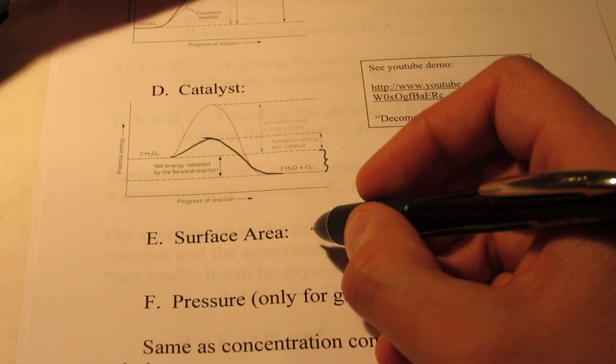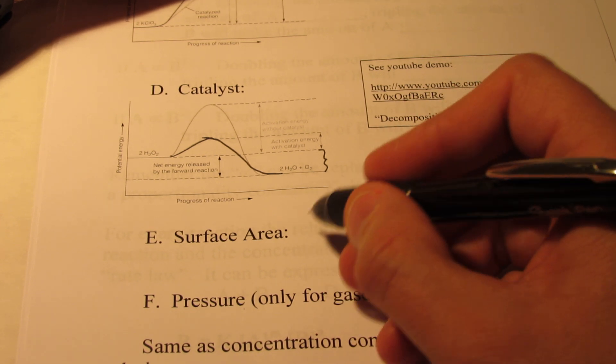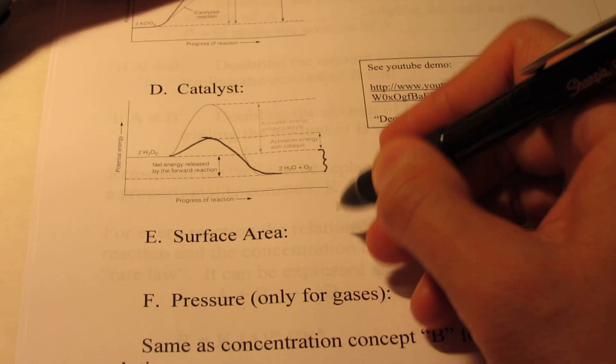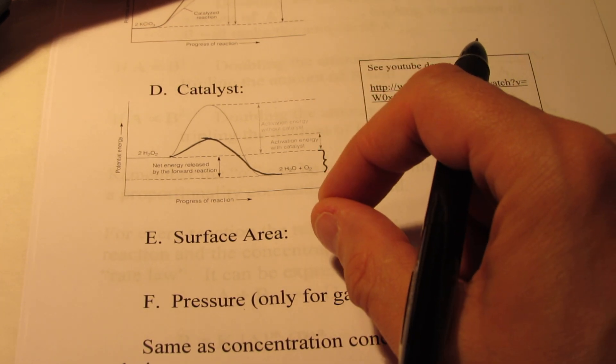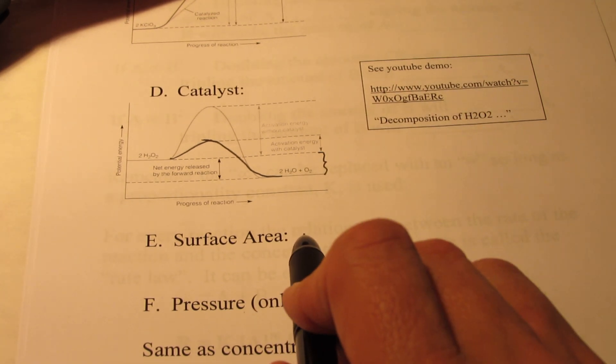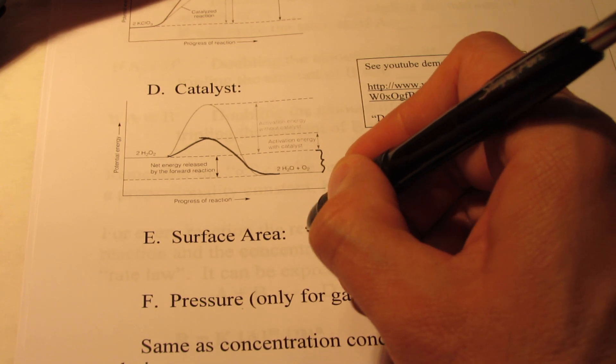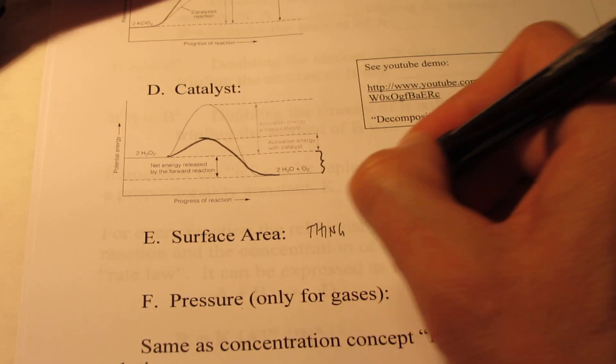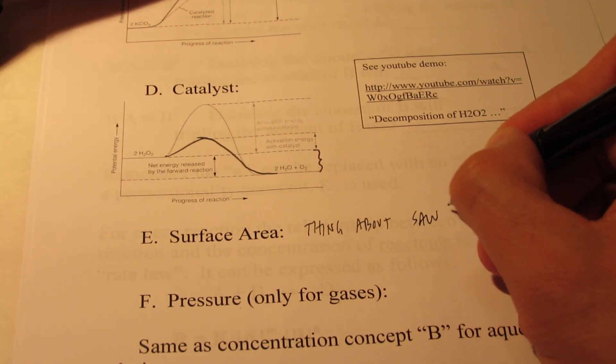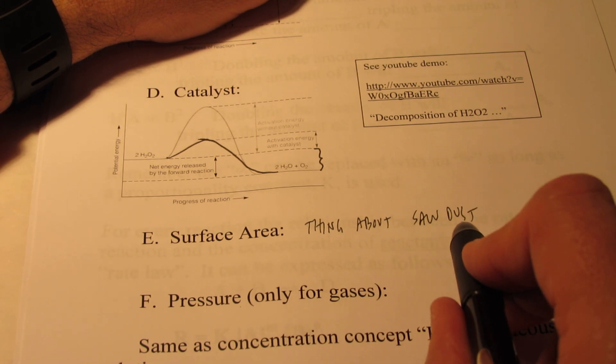Surface area. Surface area usually deals with solids. And as we grind up or pulverize our solids, we take large particles and turn them into very small particles. So the surface area that's allowed to react increases dramatically. When we think about surface area, think about sawdust.